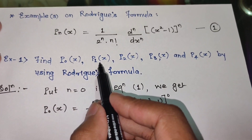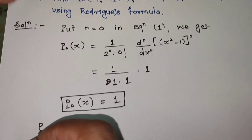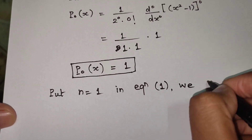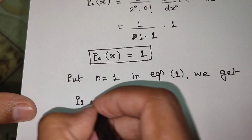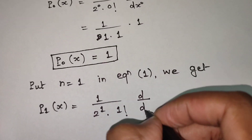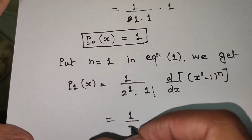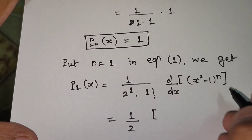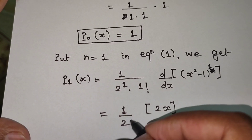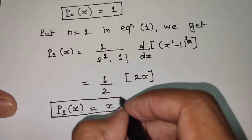Next we find P1(x) by putting n = 1 in equation 1. We get P1(x) = 1 upon 2¹ into 1 factorial, times the first order derivative of (x² - 1)¹. This gives 1/2, and the derivative of (x² - 1) is 2x. The 2 cancels, so P1(x) = x.